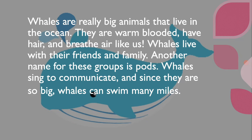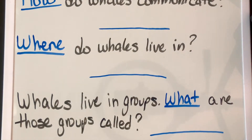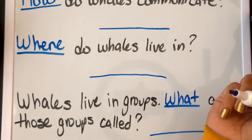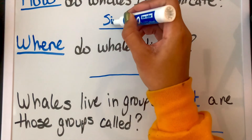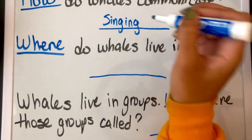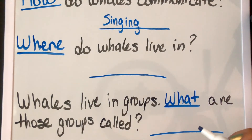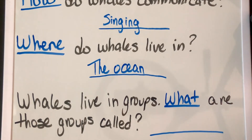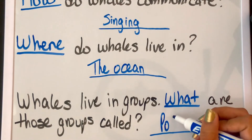Now that we know a little bit about whales, we're going to make a little activity. Take out your materials. Now let's answer these three questions together, thinking about what we just learned about whales. How do whales communicate? We learned that whales communicate by singing. Where do whales live? Whales live in the ocean. Whales live in groups — we learned that they live with their friends and family. What are those groups called? We learned that those groups are called pods.